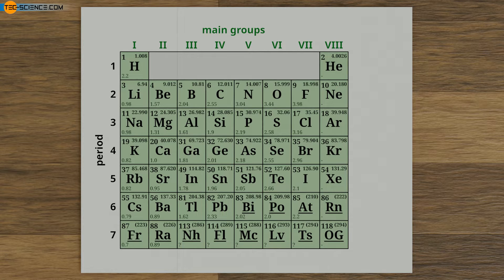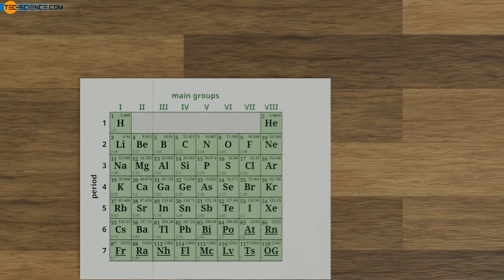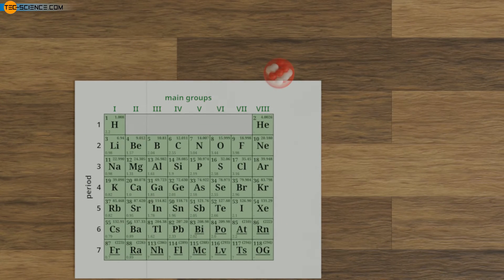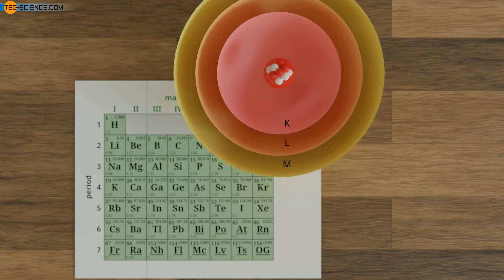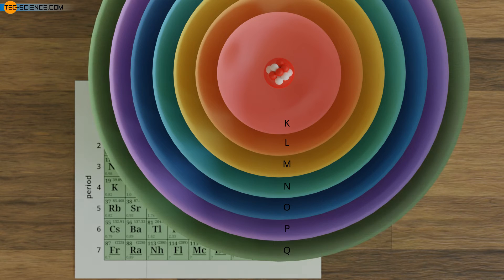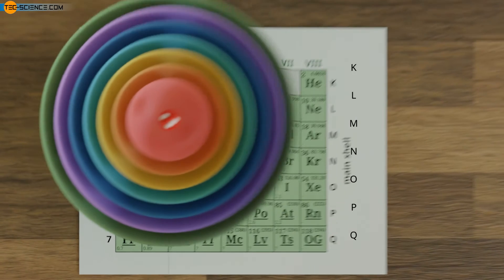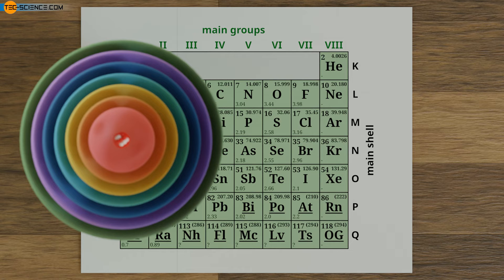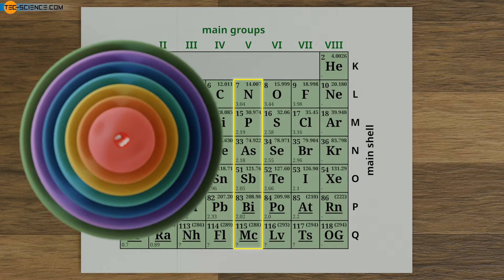The horizontal division of the periodic table into seven periods is not chosen randomly, but corresponds in the shell model to the electron shells introduced by Bohr. These shells are denoted by the capital letters K, L, M, N, O, P, and Q. From period to period, a new shell is added — this is also why atoms within a group become larger from top to bottom of the periodic table.